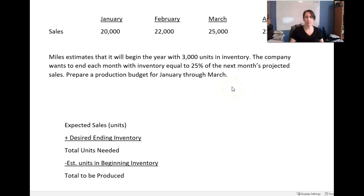Alright, let's take a look at this. We've got sales of January, February, March, and April. April's cut off at $21,000. That's our sales budget - what we're projecting to sell in those months: $20,000, $22,000, $25,000, $21,000. Miles estimates it will begin the year with 3,000 units in inventory. The company wants to end each month with inventory equal to 25% of the next month's sales. Prepare production budget January through March.